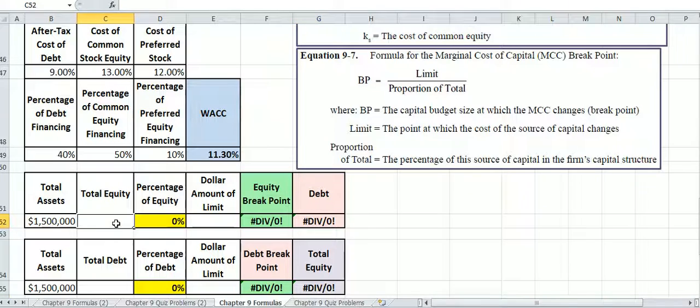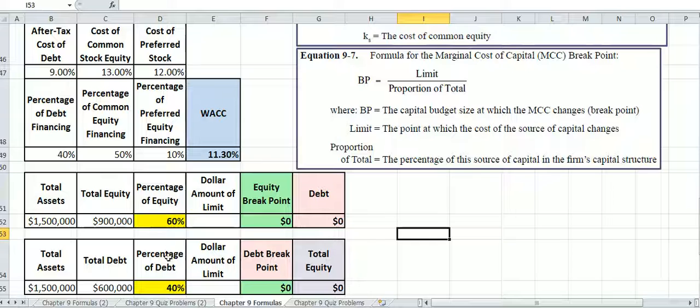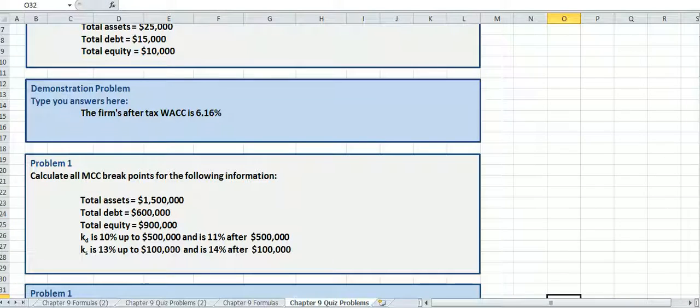total equity is $900,000, and total debt is $600,000. And that's going to give us our proportion or percentages. And then we just need to put in our dollar amount limit for equity, which is $100,000, and the debt limit is $500,000.